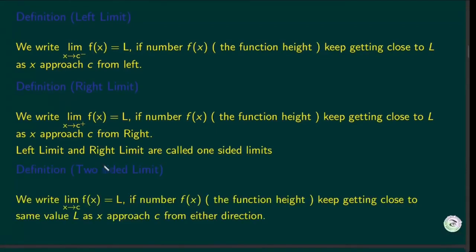Now I will introduce a new definition: the two-sided limit. We write the limit of f as x approaches c equals l if the function value keeps getting close to the same value l as x approaches c from either side. This means you can come from either side. The two-sided limit is defined only if the right limit and left limit are both defined and their values are equal to l.